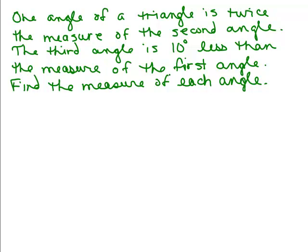Step one is to read the whole problem through at least once or twice. Get comfortable with what you're being asked and what you know. The trick here is deciding what we're going to call the three angles. One angle is twice the measure of the second, so I would have to know the second angle to get that one. The third angle is 10 degrees less than the first angle, so I'd have to know the first angle to do this one. So I've got to start off knowing the second angle.